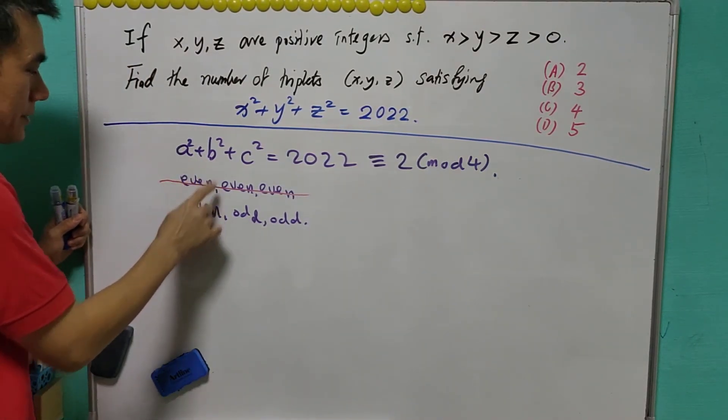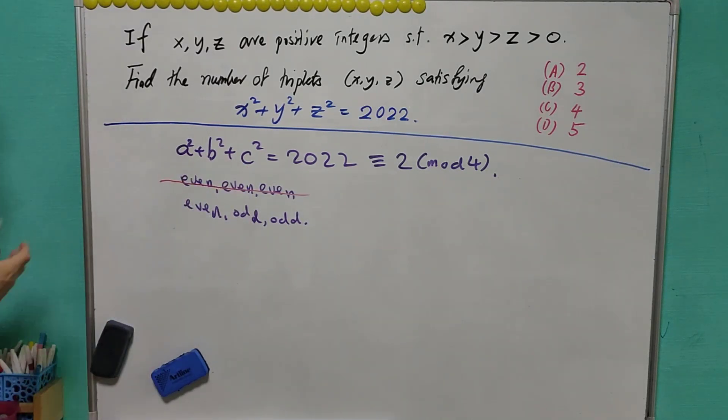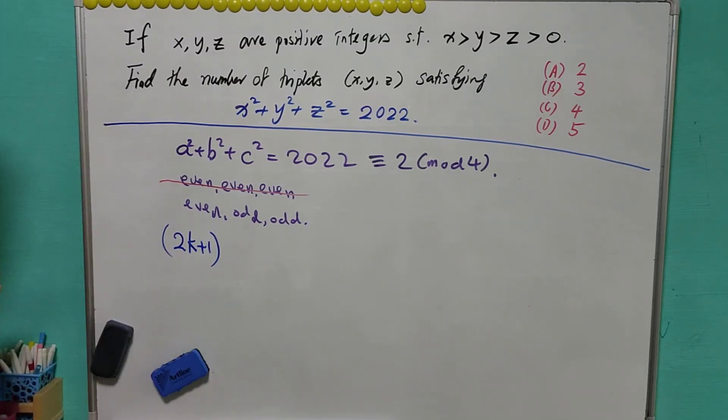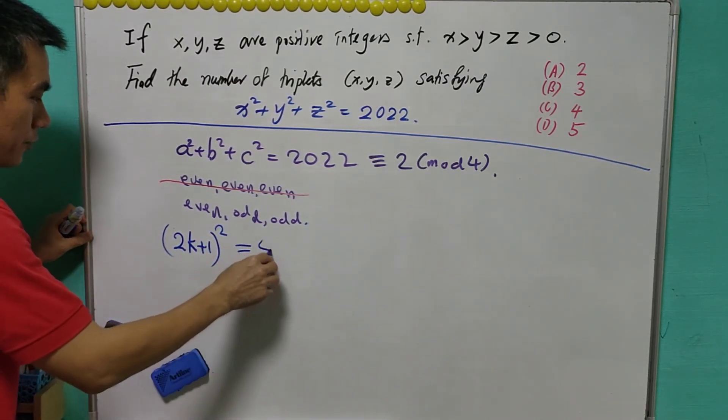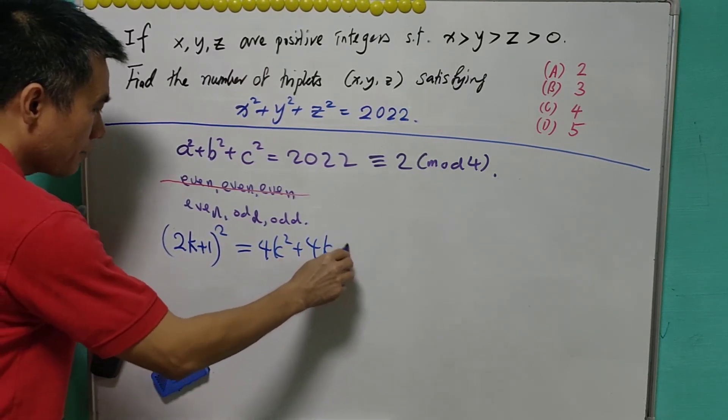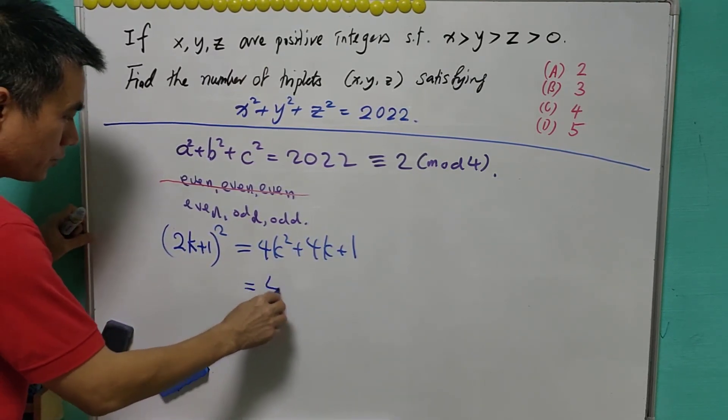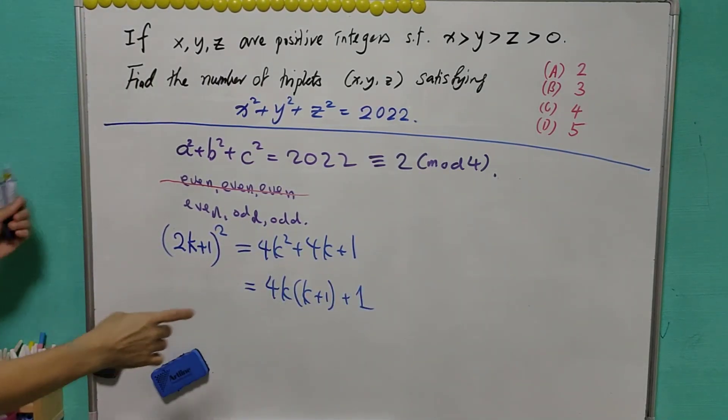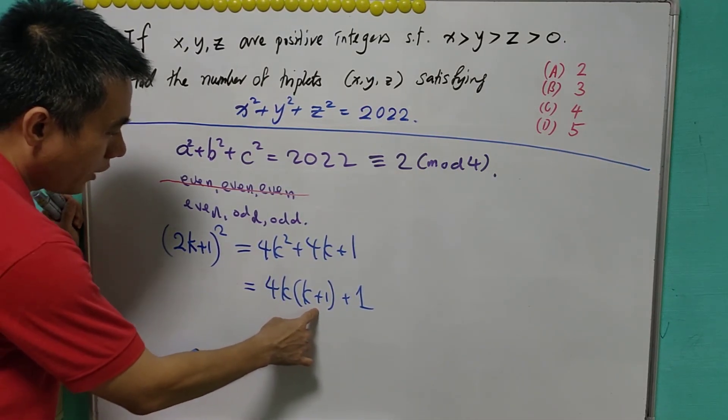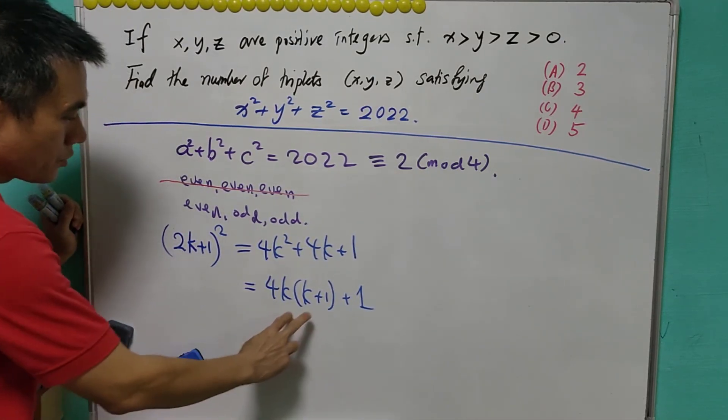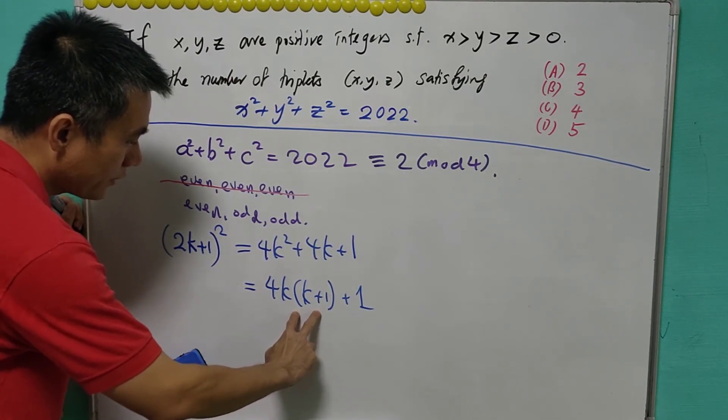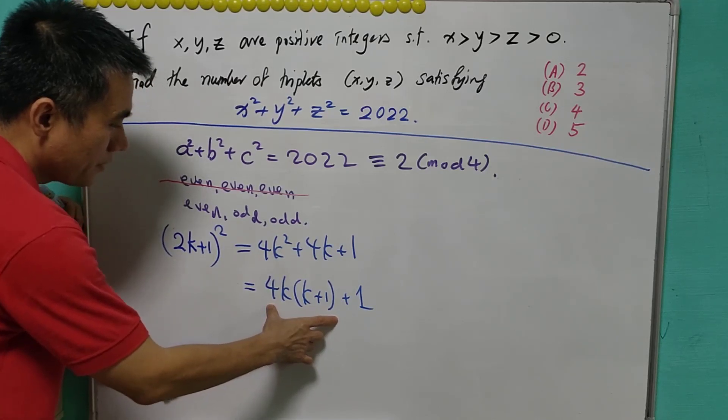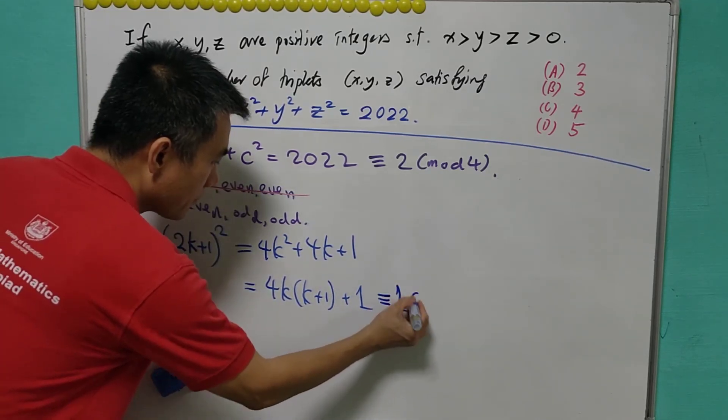Now, if let's say a is even and b, c are odd, what happens to the square of the odd number? We let 2k plus 1 to represent an odd number. The square of it will be equal to 4k square plus 4k plus 1, which equals to 4k times k plus 1 plus 1. Now, k is an integer. k and k plus 1 are consecutive. So one of it must be an even number and one is an odd number. Since there's one even number, so 4 times an even number is a multiple of 8. This will be congruent to 1 mod 8.